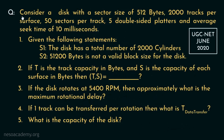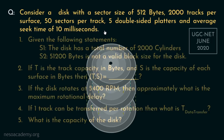Consider a disk with a sector size of 512 bytes, 2000 tracks per surface, 50 sectors per track, 5 double-sided platters, and average seek time of 10 milliseconds. There are 5 questions pertaining to this particular organization. We will solve them one by one, but before beginning the solution, let's understand the organization.